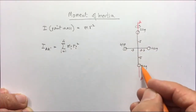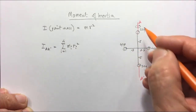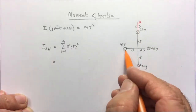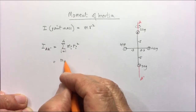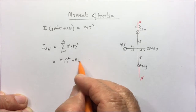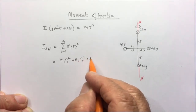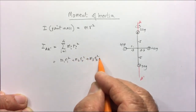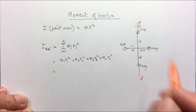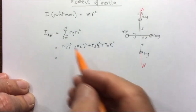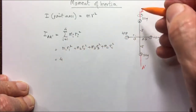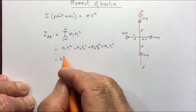Labeling the masses 1 through 4 and adding them all up: it's M1 R1 squared plus M2 R2 squared plus M3 R3 squared plus M4 R4 squared. M1 is 4 kg and R1 — the distance from the axis — is 0.3 meters.